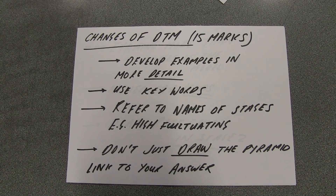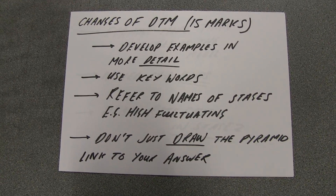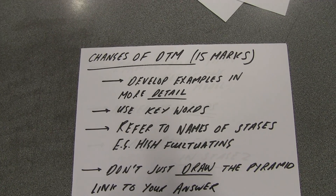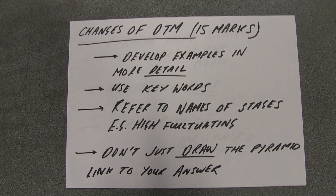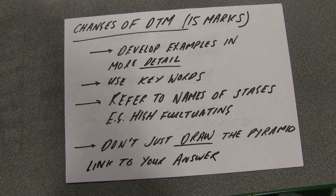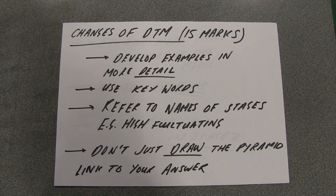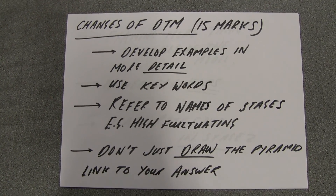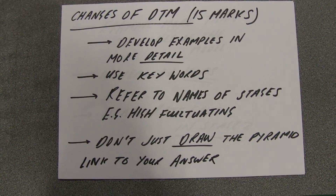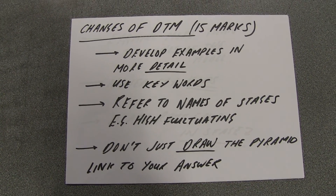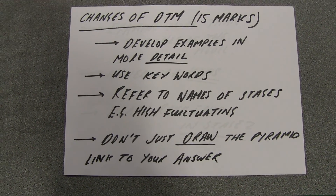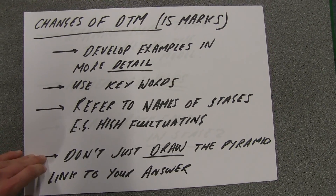Some of you started to use generic examples — for example saying 'Brazil in stage three.' You need to develop those answers more fully. You've got examples of Japan, you've got examples of the UK, you've now got examples of the Gambia. Use them to explain why those countries specifically are in those stages of the model. Failure to explain meant that your marks got capped at around level one or level two. So use your examples, make sure you're using keywords — don't forget things like economically active, young dependence, dependency ratios, and all sorts of different things like that.